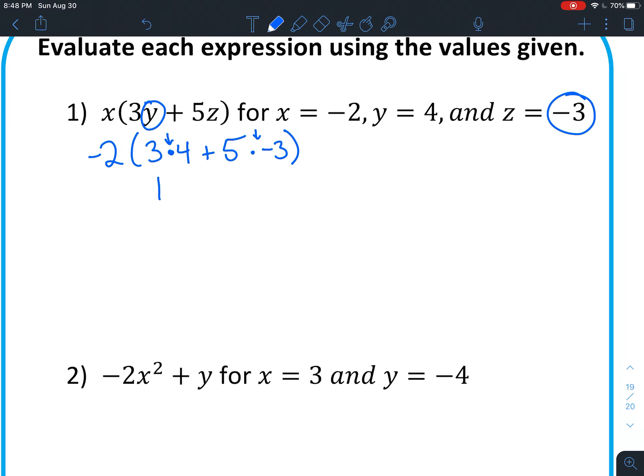3 times 4 is 12. 5 times negative 3 is negative 15. So you want to keep that in mind. 12 plus negative 15 have different signs. So we're going to subtract. And 15 is larger than 12. So that makes this a negative.